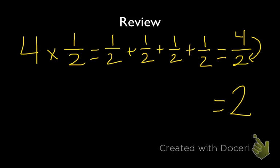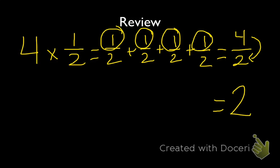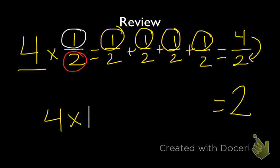So 4 times 1 half is the same as adding 1 half 4 times and then dividing by 2. We can also see that if we were to look at just the numerators, we have 4 of them, so that's going to be the same as 4 times 1, or 1 times 4. So the algorithm that we would use to find our full answer is going to be 4 times 1, our numerator, divided by 2, our denominator. When we multiply fractions by whole numbers, this is going to be the algorithm that we use.